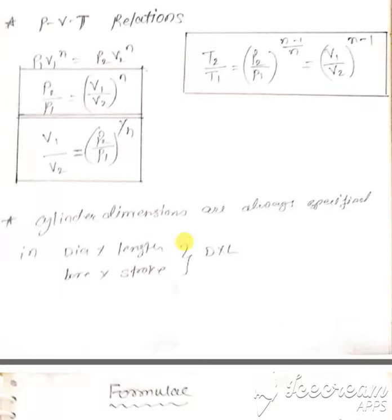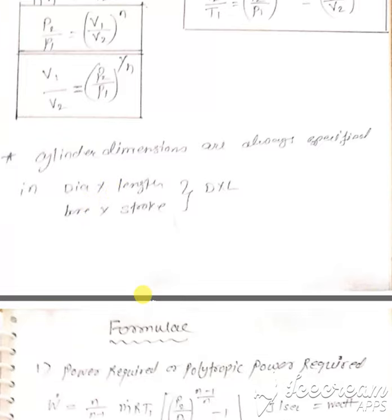Cylinder dimensions are always given. Suppose dimension of a cylinder is given as 40 into 50. Then 40 will be the diameter and 50 will be the stroke length. Dimension is always given in bore into stroke, D into L.